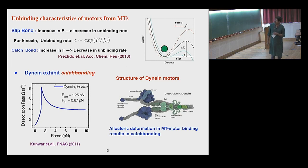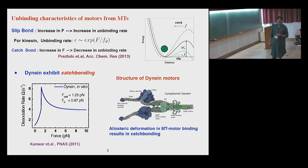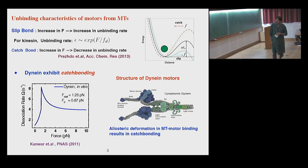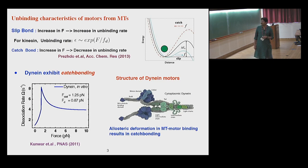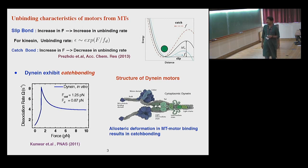However, you can have another scenario where you exert a force and the barrier height actually goes down, causing the unbinding rate to also decrease as a function of force for a certain range of force parameters. When one looks at the unbinding characteristics of dynein motor, this catch bond effect is seen to manifest itself. What I show here are experimental data points for the unbinding characteristics of a single dynein from microtubule filaments — in vitro experiments done by Kunwar and Gross et al. If you look at the dissociation rate for an initial range of force, there is a slip-like behavior where unbinding rates increase; and then later, you see this decrease — the catch-bonded regime where the unbinding rate decreases as a function of force.